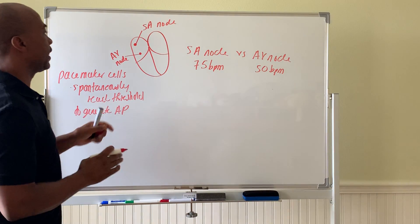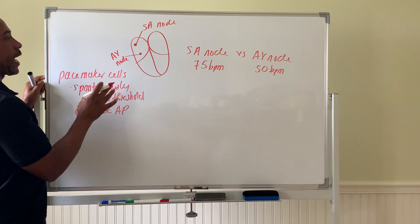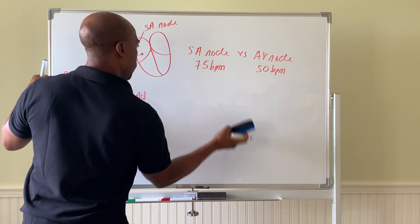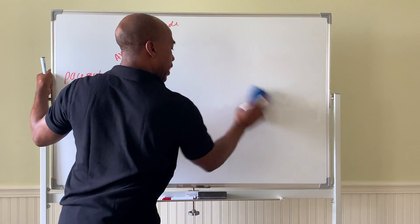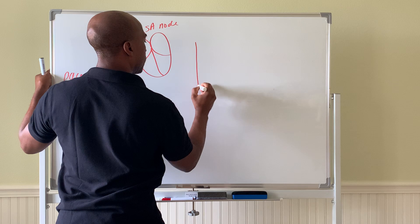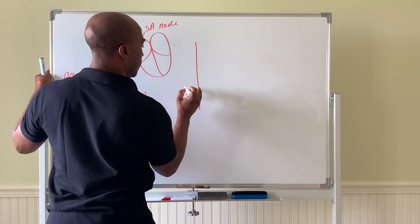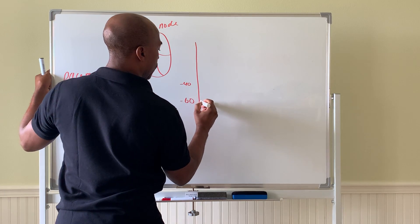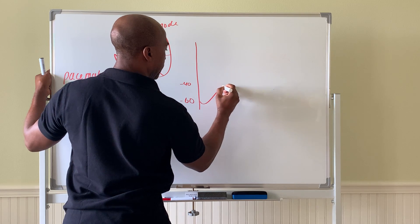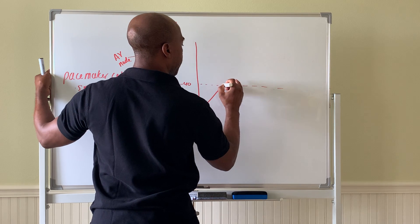Now let's look next at what the actual potential looks like in these pacemaker cells. So let's erase a little bit to go higher up on the board. Let's say we start a scale over here. The voltage scale around negative 60 here, negative 40. So at around negative 60, these cells drift up. And at around negative 40 millivolts, that's their threshold voltage.